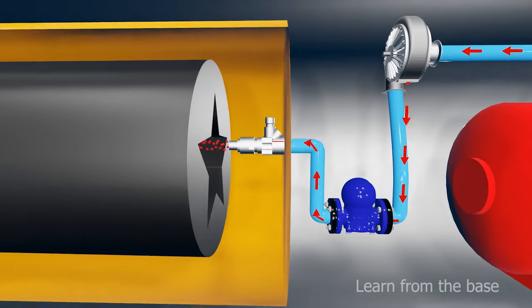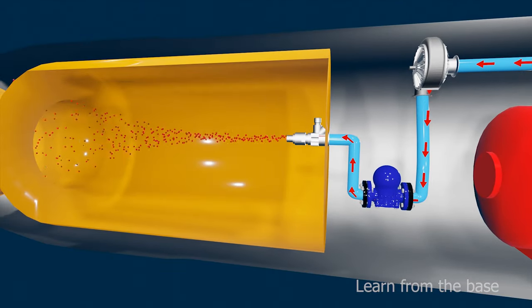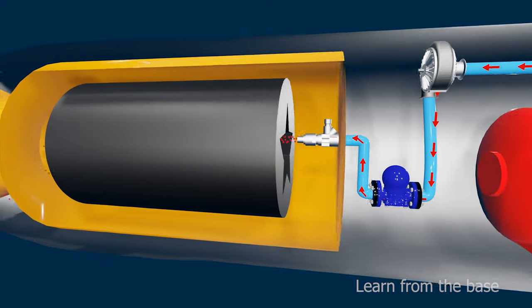This is the fuel injector. It converts liquid oxidizer into small droplets, then sprays them inside the combustion chamber.